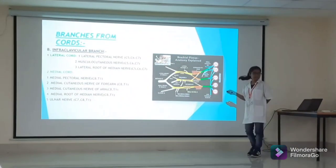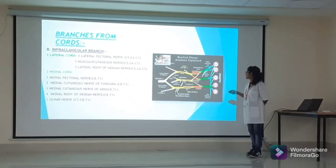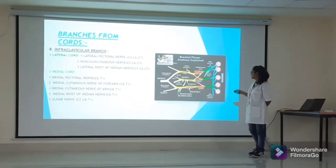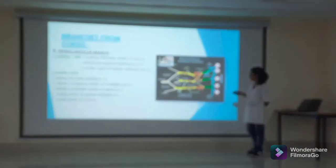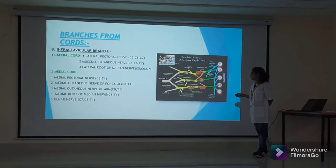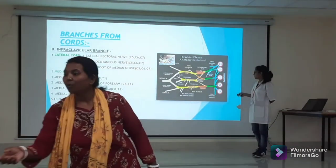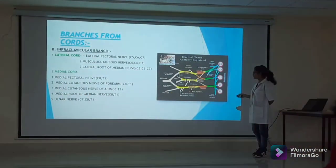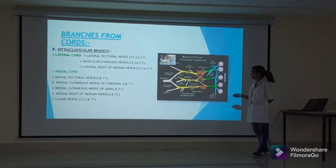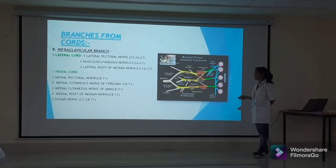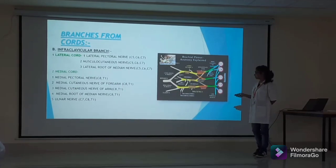Infraclavicular branches from the lateral cord include the lateral pectoral nerve, musculocutaneous nerve, and lateral root of the median nerve. The medial cord has five branches: medial pectoral nerve, medial cutaneous nerve of the arm, medial cutaneous nerve of the forearm, medial root of the median nerve, and the ulnar nerve.